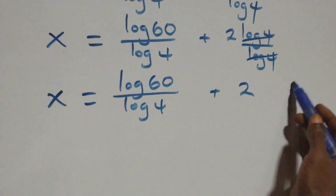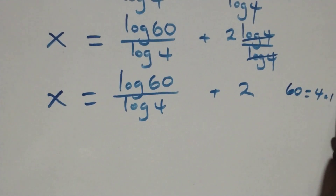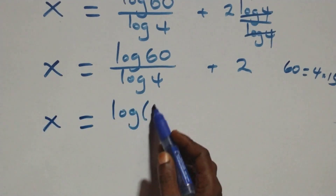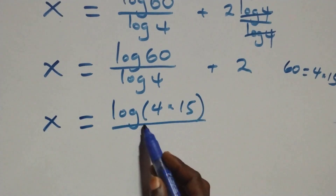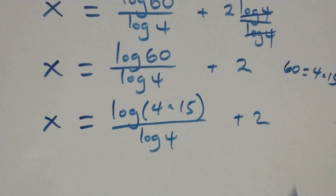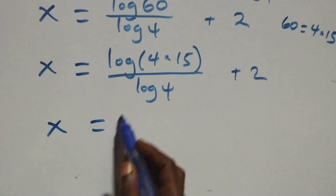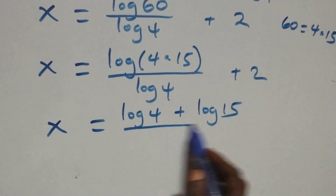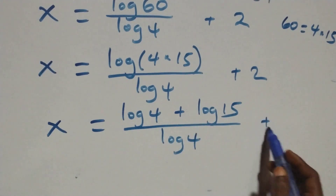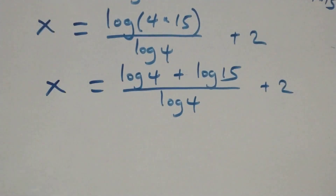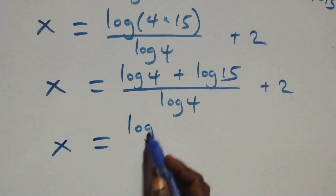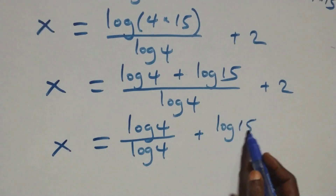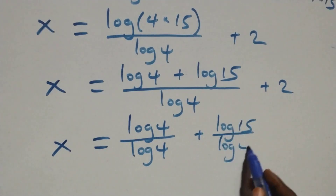Then also here, sixty can be written as four times fifteen. So what we have becomes x equals log of four times fifteen over log four, plus two. This also follows the log product rule, and we have x equals log four plus log fifteen over log four, plus two. Splitting the fraction: x equals log four over log four plus log fifteen over log four, plus two.